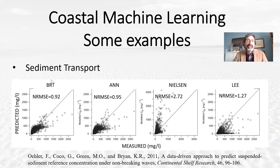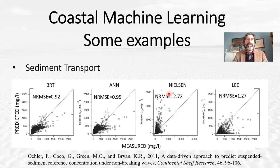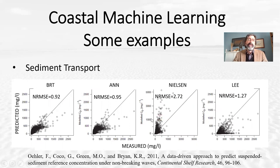In this first example, we tried together with co-authors to predict the suspended reference concentration. There are some theoretical, although still heavily parameterized, expressions from Niels and from Lee. We developed using the same dataset boosted regression trees and an artificial neural network, which in both cases performed better than the theoretical approaches. You can also visually see that they work better, although there is still a lot of scatter.